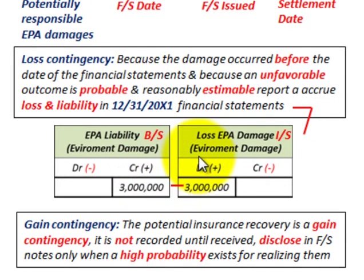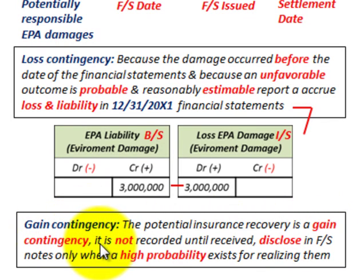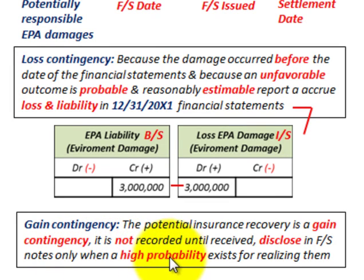The probable damages for the loss were straightforward — we made a recording on our financial statements. For the gain contingency, that's a different story. The potential for insurance recovery is a gain contingency, and it is not recorded until received. What you would do is disclose it in the financial statement notes only when a high probability exists for realizing the gain on the insurance settlement due to the damages incurred.